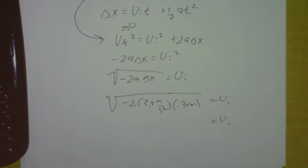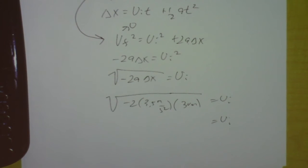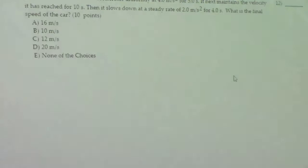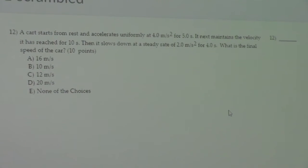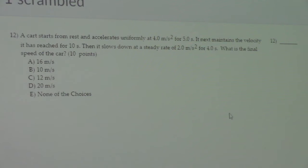The car starts from rest, okay, initial velocity of zero. Accelerates uniformly at 4 meters per second squared for 5 seconds. And then it next maintains the velocity for 10 seconds. Then slows down at 2 meters per second squared for 4 seconds. What is the final speed of the car? So we did problems like this. If you remember, it was a train going through a train station. It would speed up, go through the town at a constant speed, and then slow back down to the next stop. Take a look back at the first homework. The key here is to really sketch it out. This has three different legs of the trip.